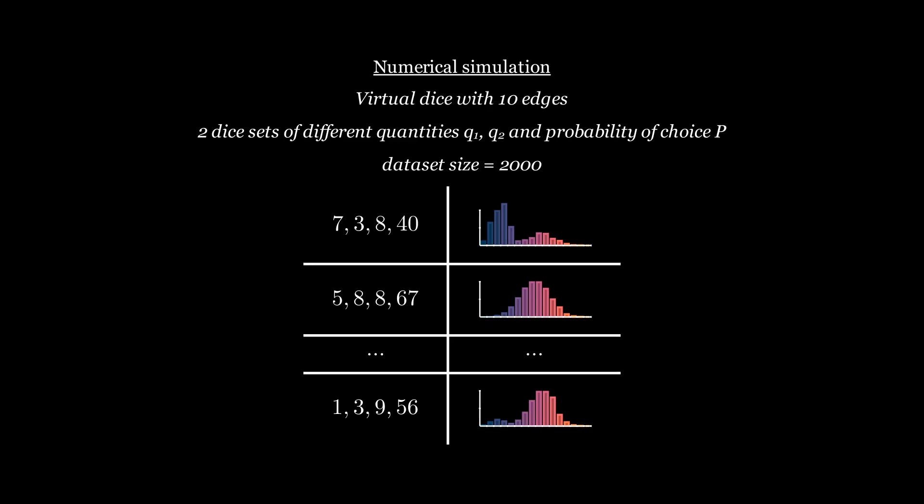Now we show how it works for a more challenging case. The previous example was too simple — it had one input with a gradually dependent unimodal distribution. Now we have two sets of dice of different quantities and a probabilistic switch for the choice. The data may even be generated in a physical experiment using two die sets and a coin. The coin is flipped, and either die set is selected according to the outcome. The distributions are obviously bimodal in general. In this example, the coin is replaced by a third input parameter, which is the probability of choosing the first die set. The dice are virtual with 10 edges, not 6.